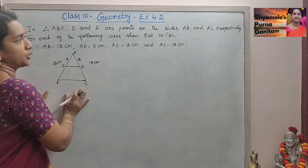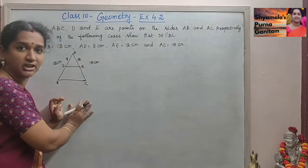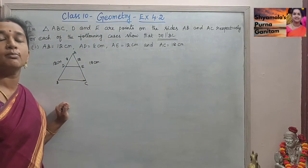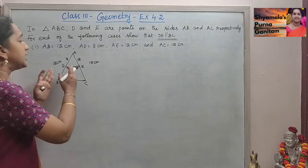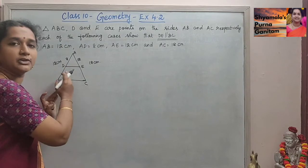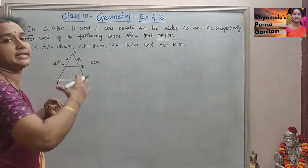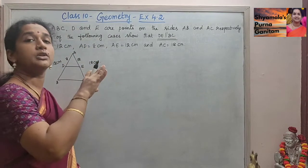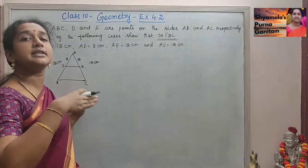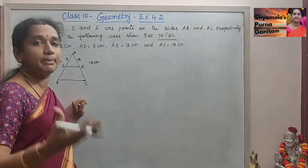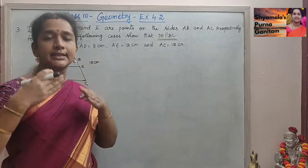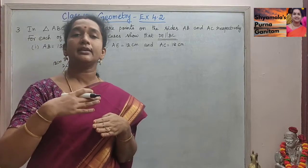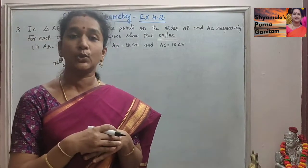For proving that DE is parallel to BC, we know by the basic proportionality theorem that if any two sides of the triangle are parallel, then the sides are proportional. But here we are asked to prove the sides are parallel, so we use the converse of the basic proportionality theorem — if the sides are proportional, then any two sides will be parallel to each other.